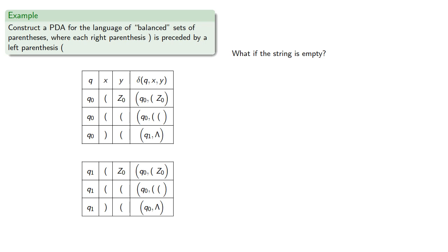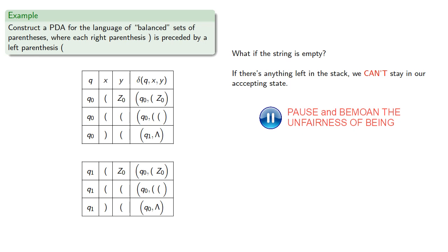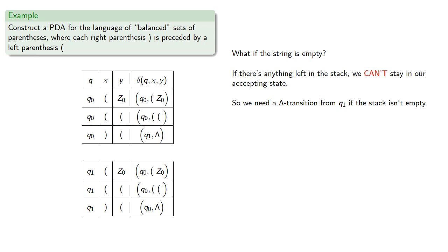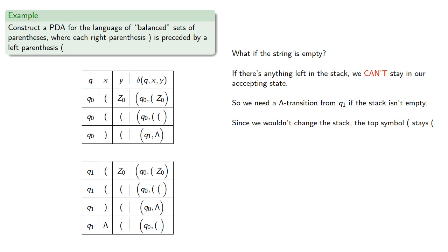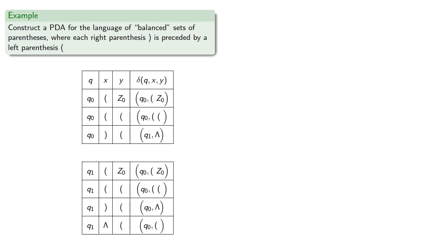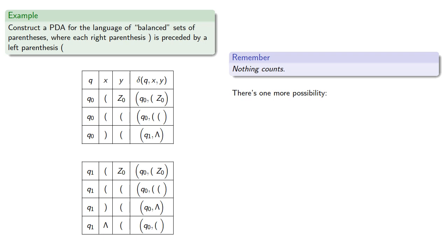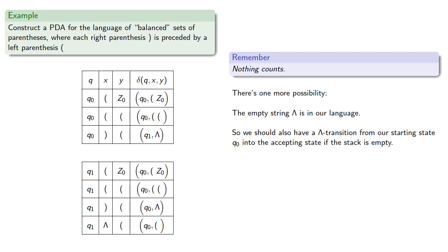What if the string is empty? If there's anything left in the stack, we can't stay in our accepting state because we have more open parentheses than closed. So we need a lambda transition from the accepting state if our stack isn't empty, and the top symbol open parenthesis stays open parenthesis. Also remember, the empty string is in our language, so we should also have a lambda transition from our starting state q0 into the accepting state if the stack is empty. This gives us our complete transition function delta.